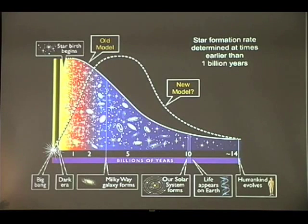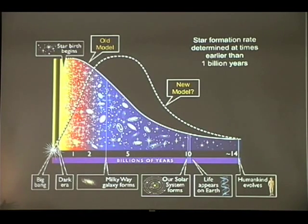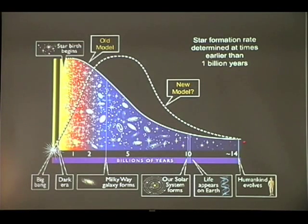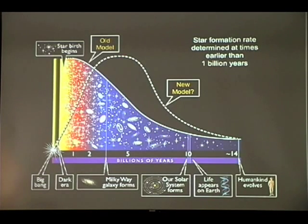We can use these deep images to tell us something else: at what rate the universe as a whole was forming new stars — not some given galaxy, but the whole universe. We already knew before Hubble that some seven or eight billion years ago, the universe was forming new stars as a whole at a higher rate than it is today.